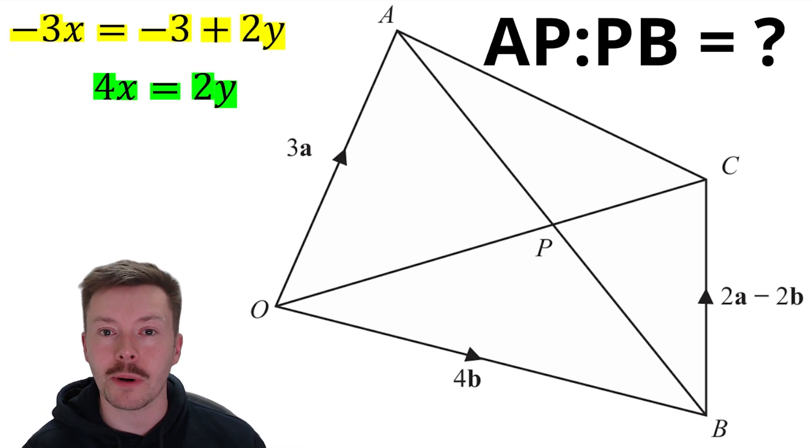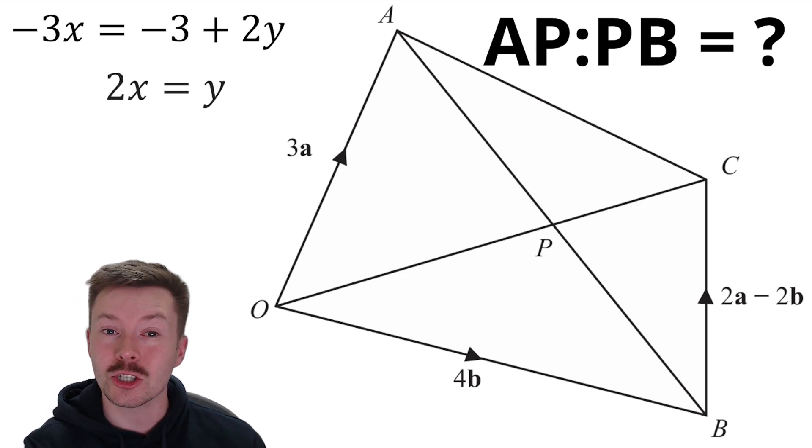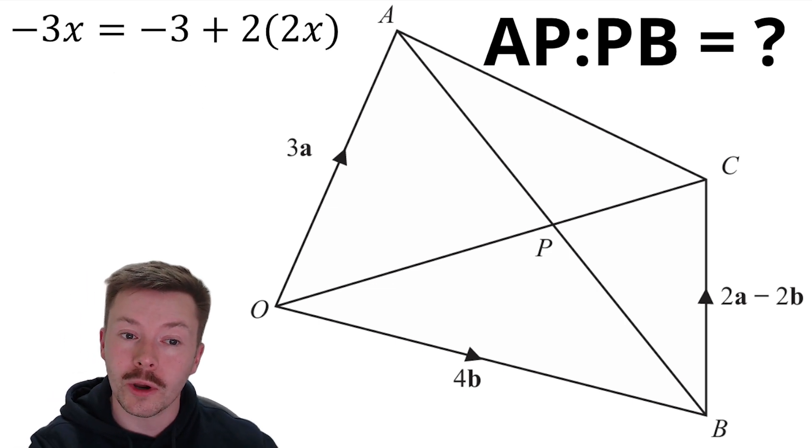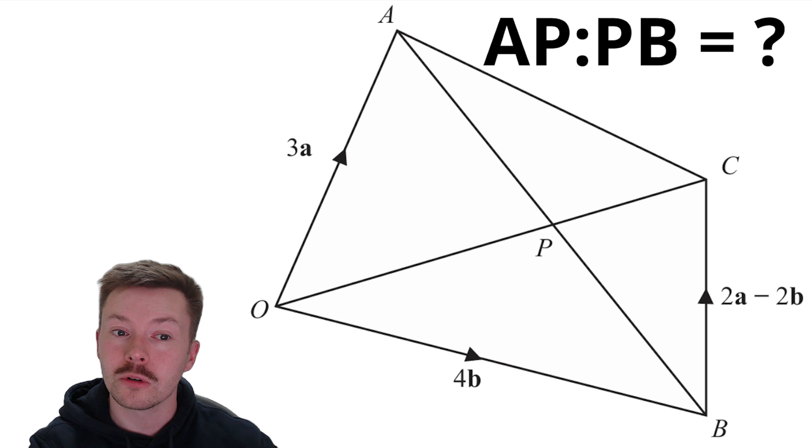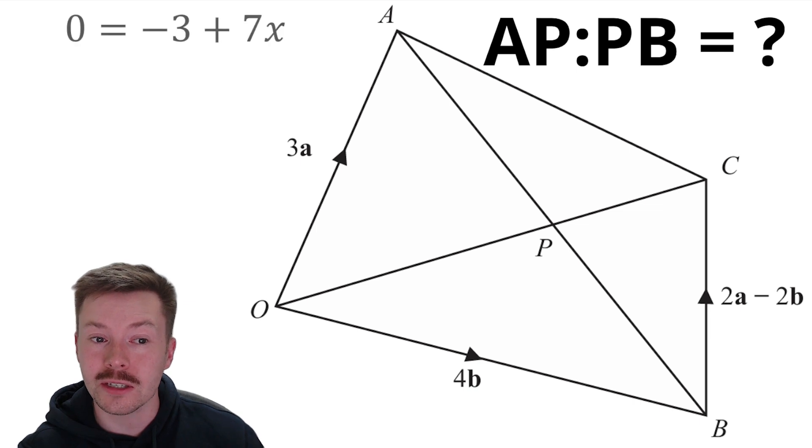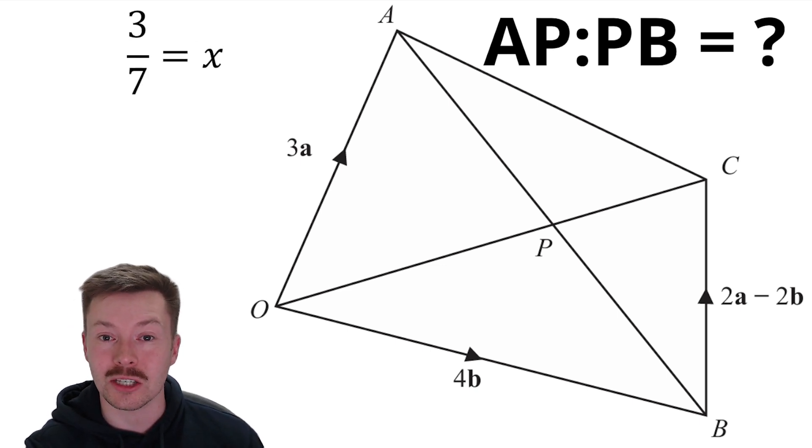Now, we can forget about the rest of it and just think about these two equations now and solve these simultaneous equations. Now, the second one, the 4X equals 2Y, is quite easy to rearrange. Divide both sides by 2 and we get 2X is equal to Y. We can then replace the Y in the above equation with 2X. Gives us this. So minus 3X equals minus 3 plus 2 lots of 2X, which 2 lots of 2X is equal to 4X. And then we're going to rearrange by adding 3X to both sides. Gives us 0 equals minus 3 plus 7X. Add the 3 to both sides, we get 3 equals 7X. Divide by 7, we get X is 3 over 7.